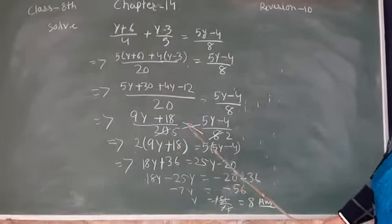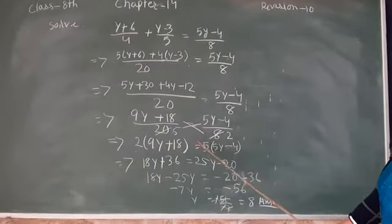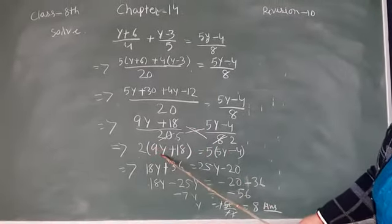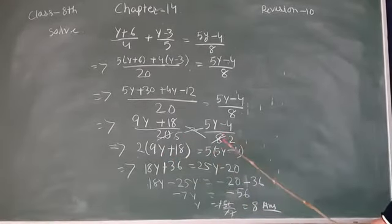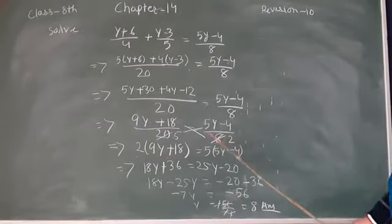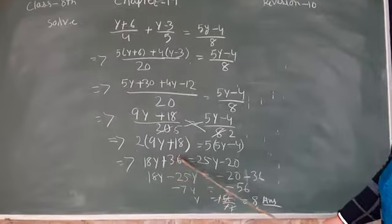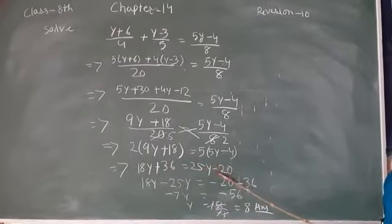Now we cross multiply the numbers like this: 2(9y+18) = 5(5y-4). Now 18y+36 is equal to 25y-20.